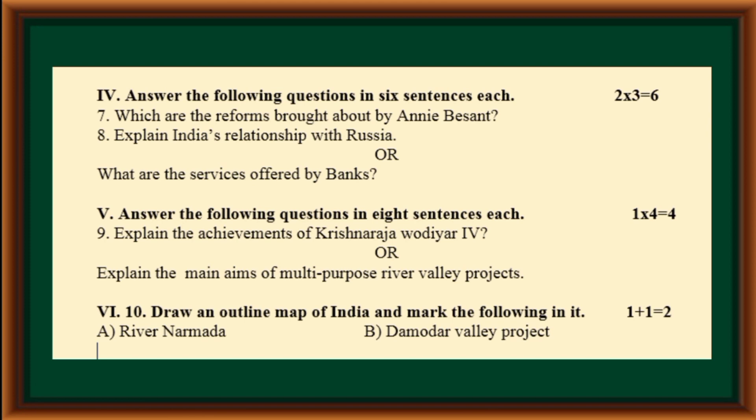Fifth main: Answer the following questions in eight sentences each. Question number nine: explain the achievements of Krishna Rajavadhyar the fourth, or explain the main aims of multi-purpose river valley projects.